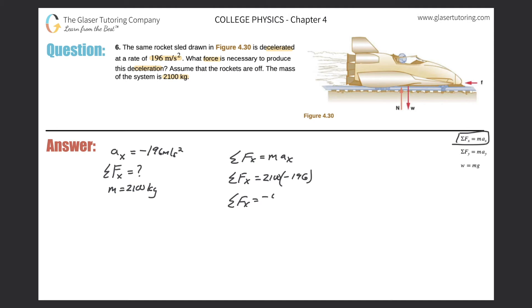So we got negative 4.12, but it should really be two significant figures. Yeah, so negative 4.1 times 10 to the 5, and that'll be in Newtons.